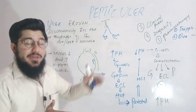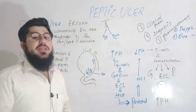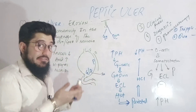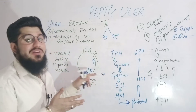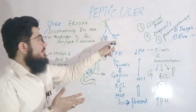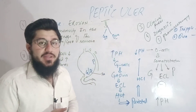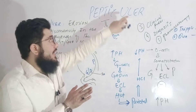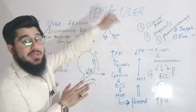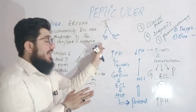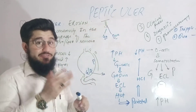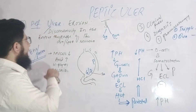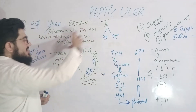If the mucosa is removed only from the gastric region, that is named as gastric ulcer. If the mucosa is removed only from the duodenal region, that is named as duodenal ulcer. So now you know ulcer, peptic ulcer, gastric ulcer, and duodenal ulcer.